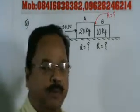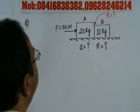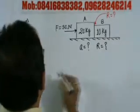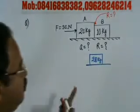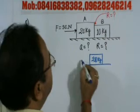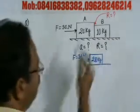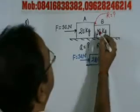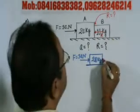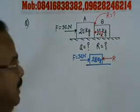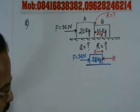In the first problem, this is the free body diagram. The free body diagram is for the 20 kg body. This is the body of 20 kg, and this is the force — a 30 Newton force is applied. This is the reaction R acting on the 20 kg body.